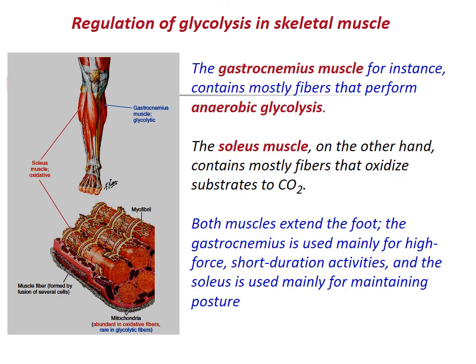Regulation of glycolysis in skeletal muscle: The gastrocnemius muscle contains mostly fibers that perform anaerobic glycolysis, while the soleus muscle contains mostly fibers that oxidize substrates to carbon dioxide. Both muscles extend the foot. The gastrocnemius is used mainly for high-force, short-duration activities, and the soleus is used mainly for maintaining posture.